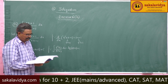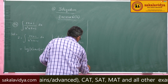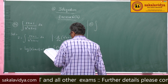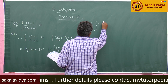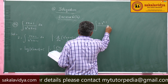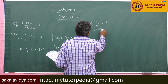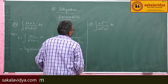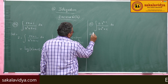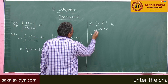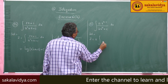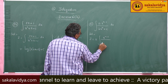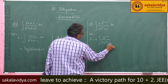Now let us go to the 25th problem. Evaluate integral of A·xⁿ⁻¹ / (b·xⁿ + c) dx. I is equal to A times integral of xⁿ⁻¹ / (b·xⁿ + c) dx.